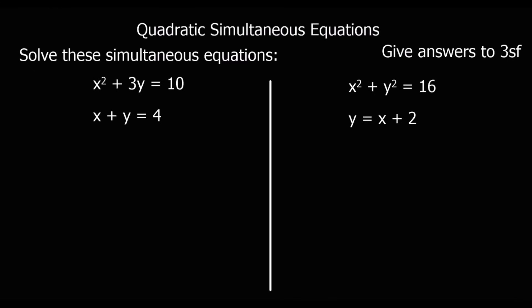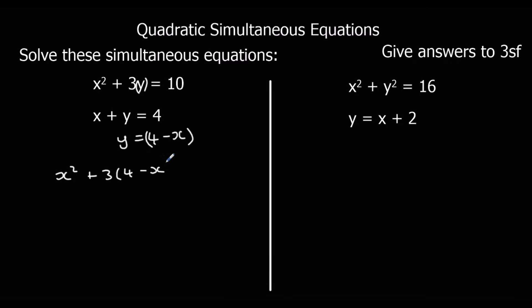Here are two for you to try — pause the video and give them a go. For the first practice question, we need to make the linear equation y equals. Taking x from both sides gives y equals 4 minus x. I can substitute this wherever I've got y: x squared plus 3 times (4 minus x) equals 10, which gives x squared plus 12 minus 3x equals 10.